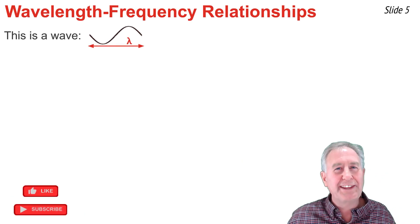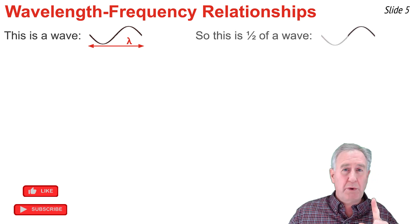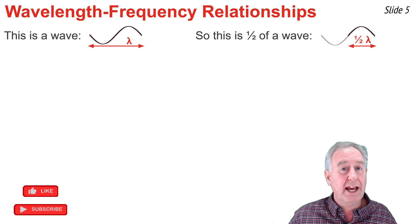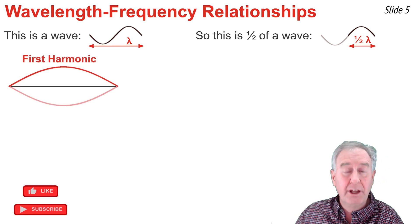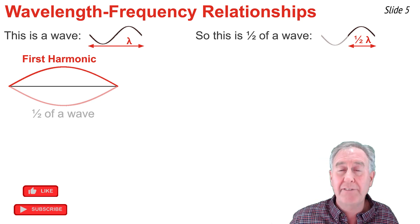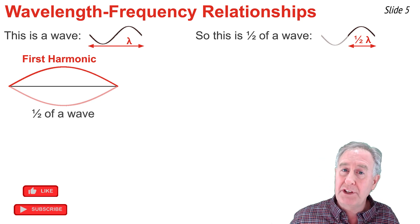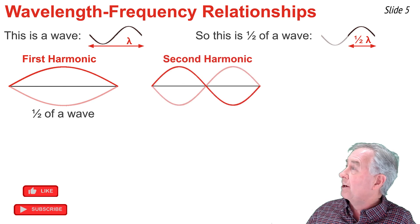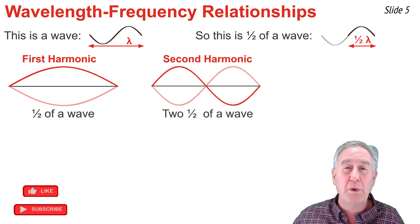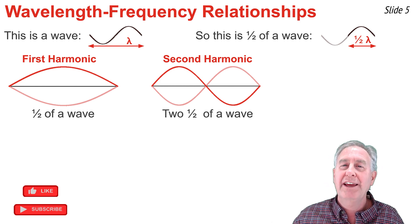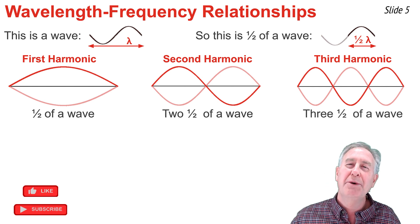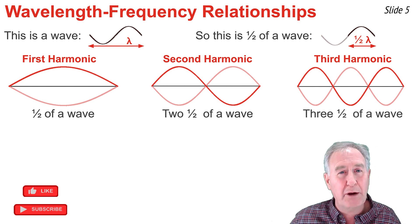A wave that is one wavelength in length, and this is a wave that is half of a wavelength in length. Considering this, I can look at the standing wave pattern for the first harmonic of a rope and say that within that rope there is one half of a wave. If the same rope vibrates as the second harmonic, there are two one-halves of a wave within that harmonic. And if the rope vibrates in the third harmonic, there are three one-halves of a wave within that rope.